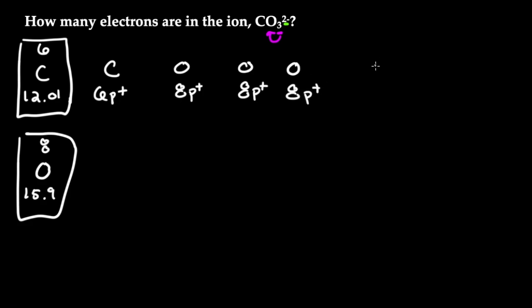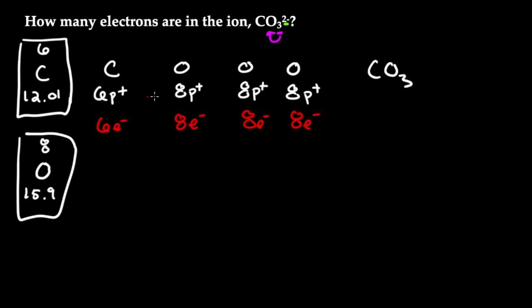If we have CO₃ with no charge, then we need the number of electrons to equal the number of protons to be neutral. Carbon has 6 protons so it has 6 electrons, and each oxygen has 8 protons so each has 8 electrons. Adding all the electrons up — 6 plus 8 plus 8 plus 8 — gives us 30 electrons for a neutral CO₃.